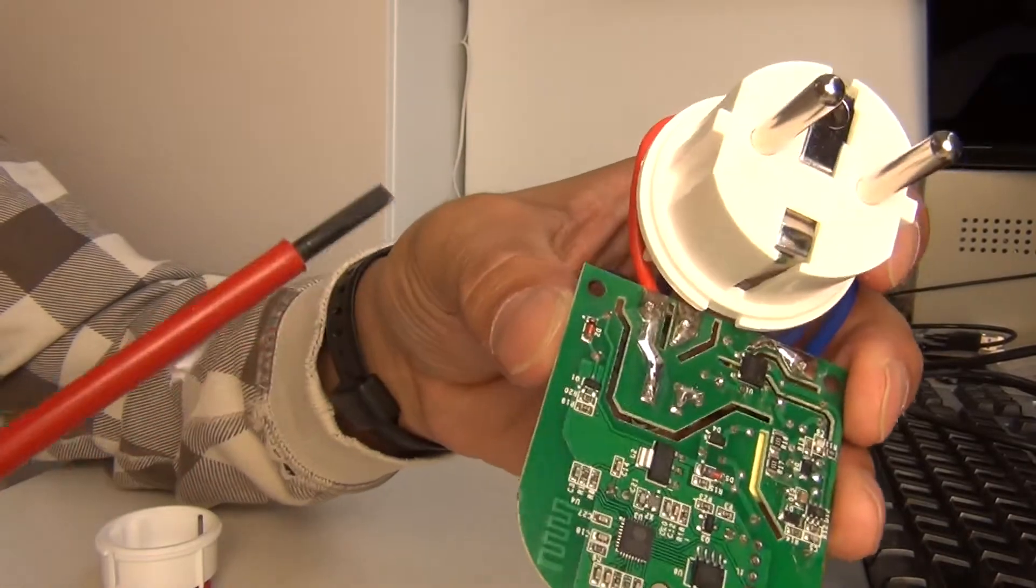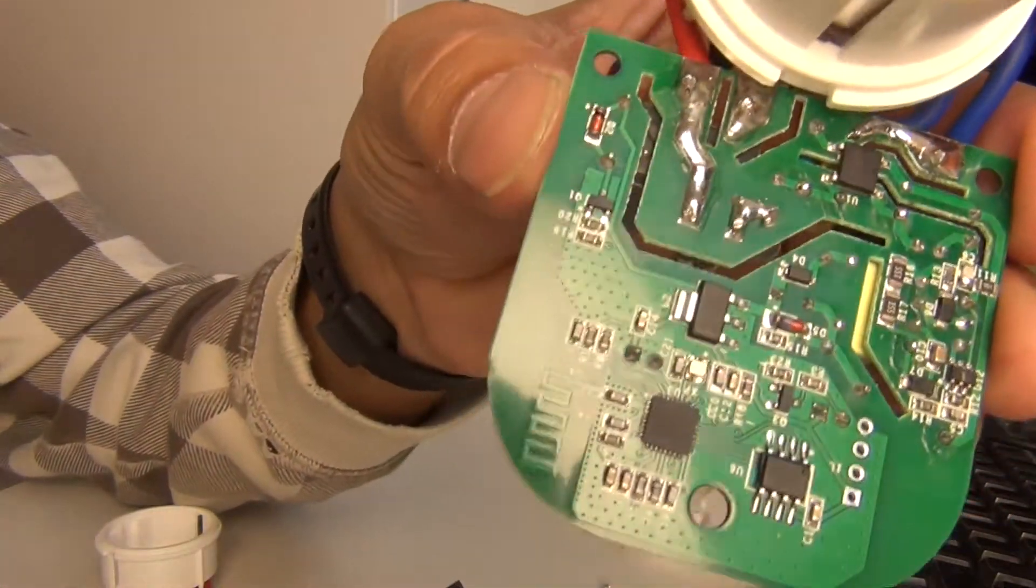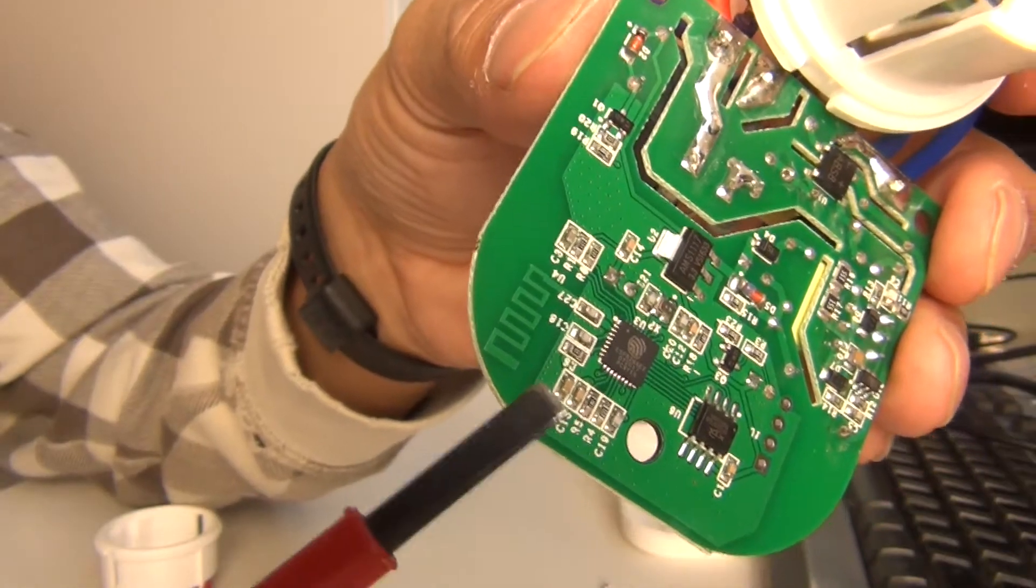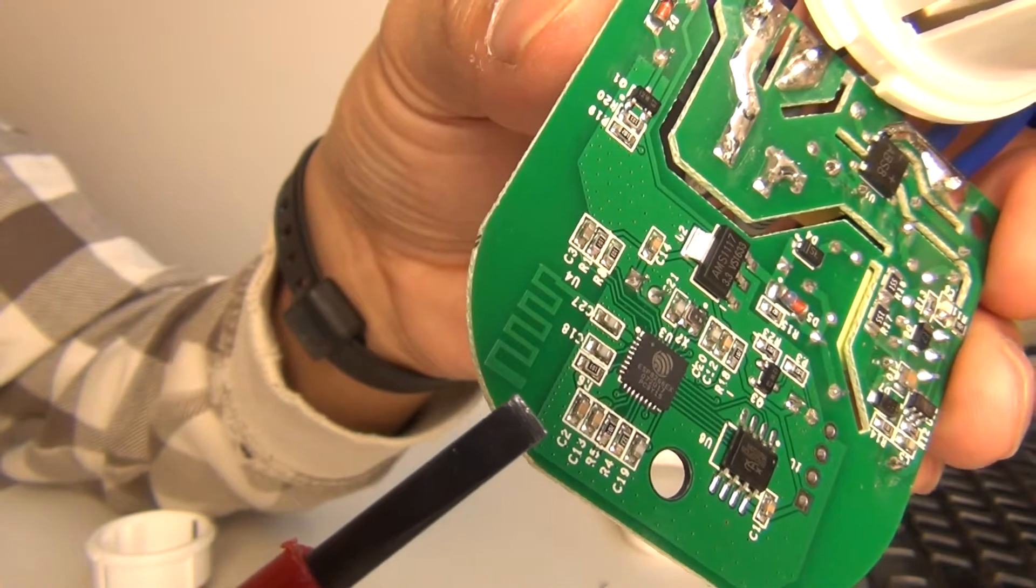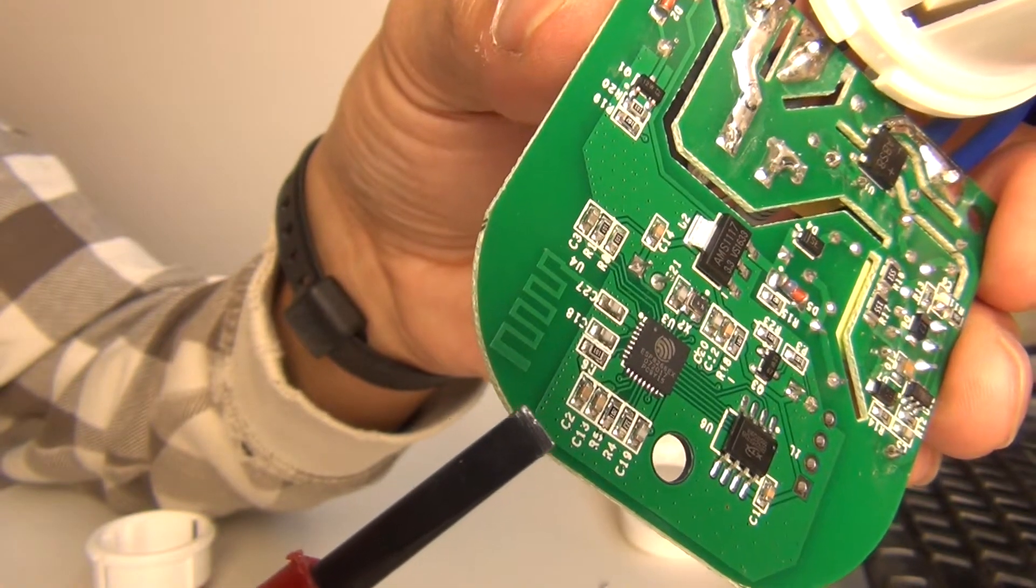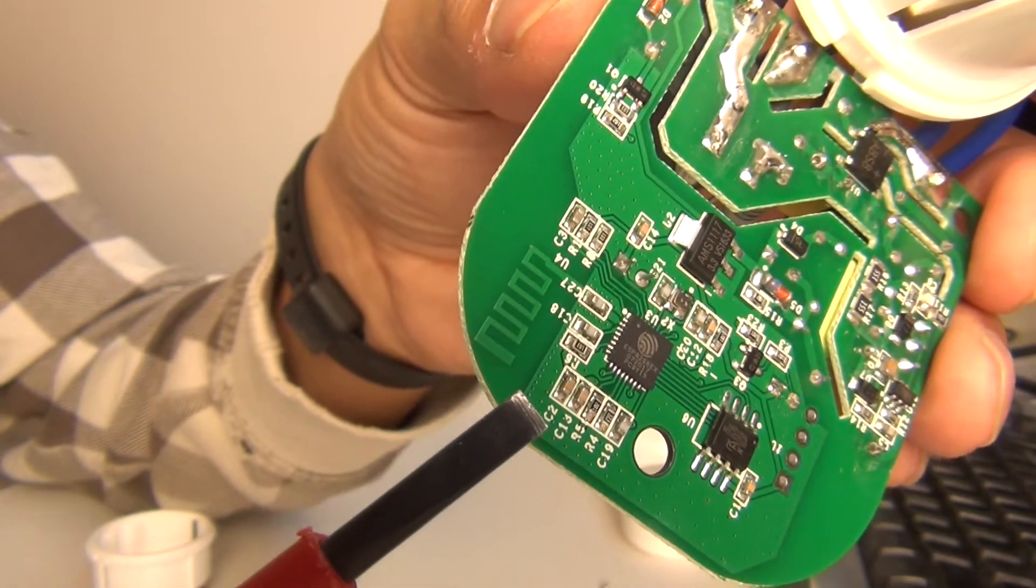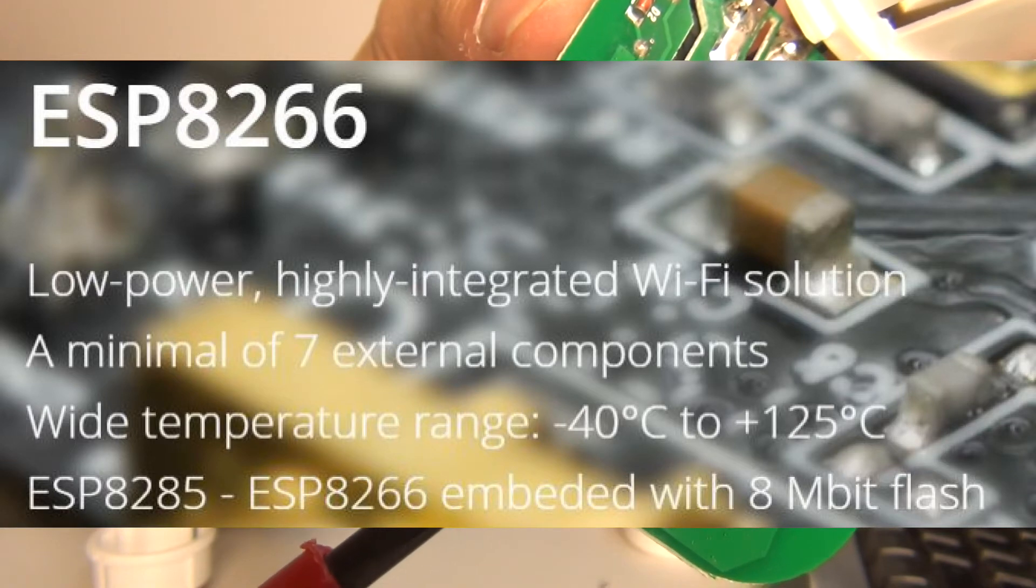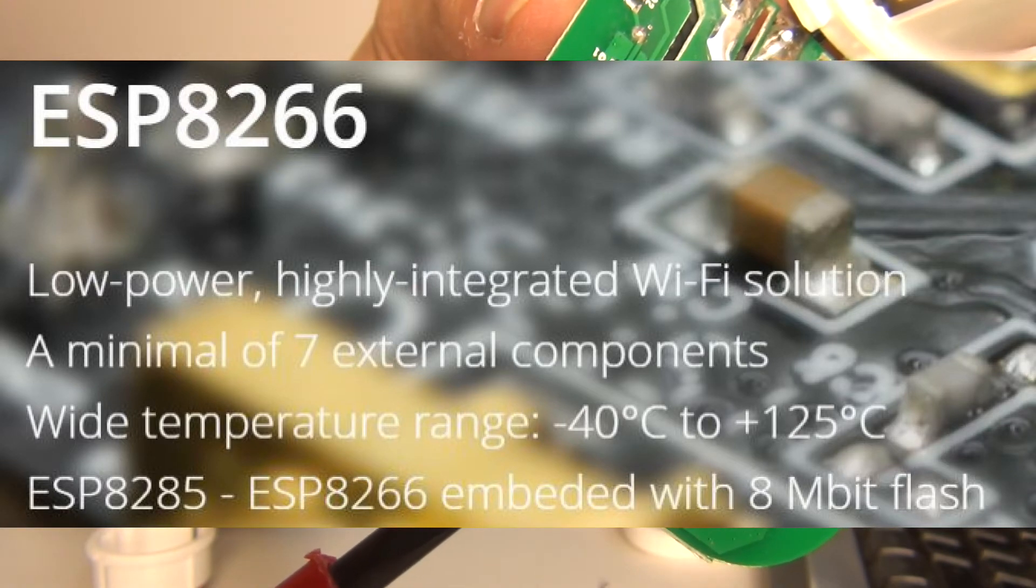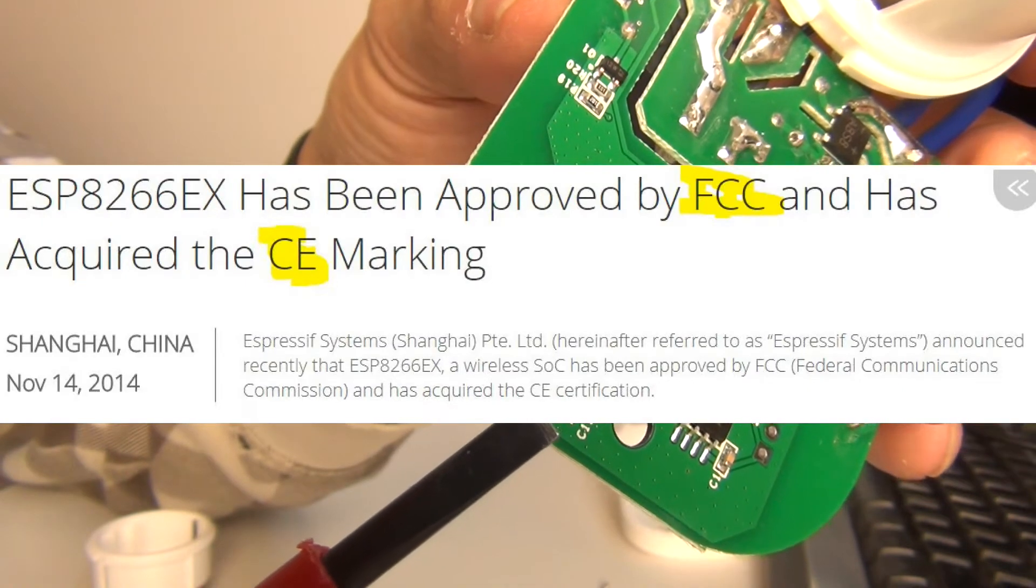I want to show you also what kind of WiFi chip they have used. This one is a WiFi chip that is very hot currently. As you can see this is the ESP8266 and it is an EX version. I find that quite interesting because the EX version is used in devices where they are having certifications for FCC and CE and other markings. So this is really a good chip to have inside the device.